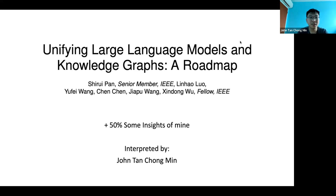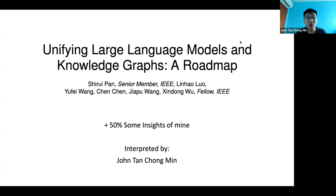Knowledge graphs, on the other hand, are extremely rigid. You have nodes connected to other nodes in relations, but they are also very informative because the relations don't change and the nodes don't change. One problem large language models face is that they are a little stochastic — they tend to generate things that may not be grounded in facts. So naturally these two approaches seem like a good fit together: one is more flexible, which is the large language model, and one is more reliable, like the knowledge graph.